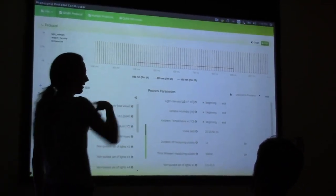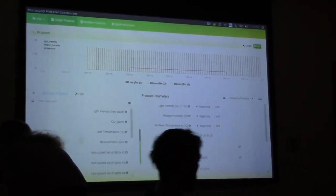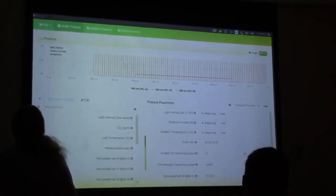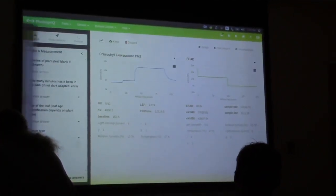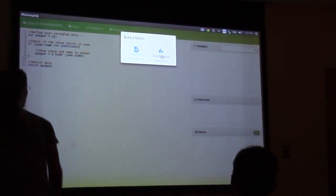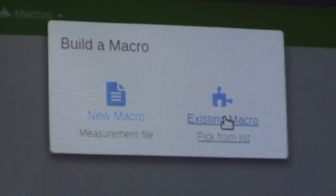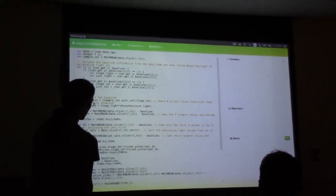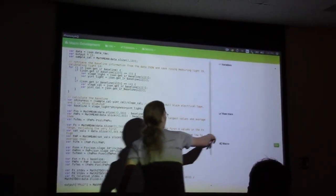In addition, we have a protocol creation tool if you create your measurement, and then there's also a macro creation tool because we have to be able to take this data that gets outputted from this raw trace and convert it into our useful values like Phi 2 and FV over FM, right? So we have a script tool, a macro development tool, which is right here, where you actually take one of those traces and then you build a macro on top of it.